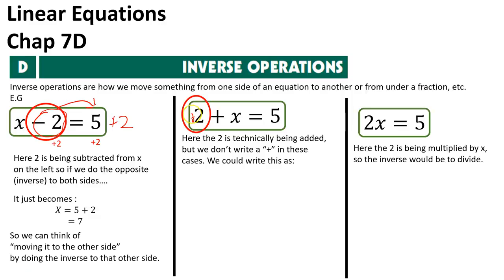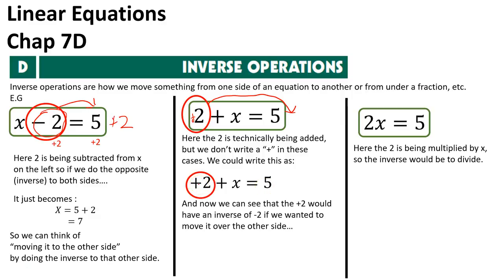So technically, if this is a plus 2, and I want to move it to the other side, I need to do the opposite function, which would be a negative. So if I wrote it as plus 2 plus x equals 5, plus 2 is the sign I need to change, so I need to subtract 2 to move it to the cross. This would leave me with x equals 5 take 2, and that equals 3.